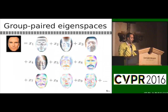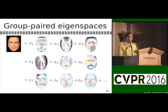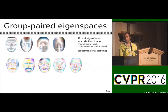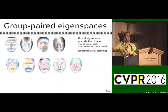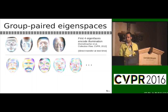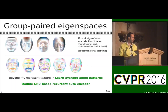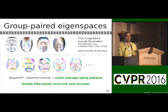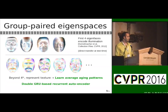We use this eigen space to project the faces. It is well known that the first four eigenfaces encode illumination, and therefore at test time they are directly transferred to the output face and not used during training. Beyond the fourth one, they represent texture and are used to learn average aging patterns common to everyone. To do this, we proposed a double GRU-based recurrent encoder-decoder.